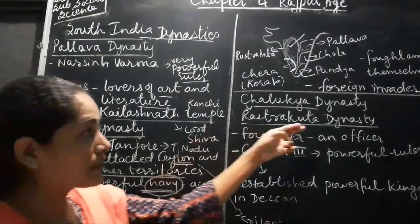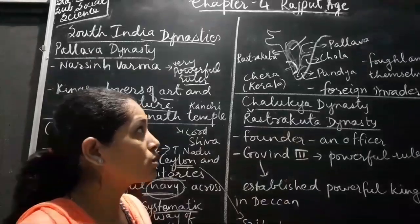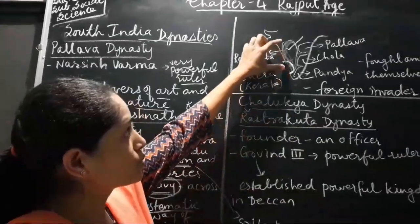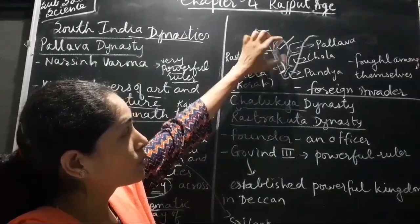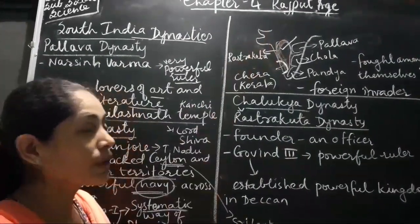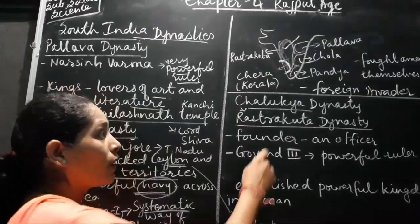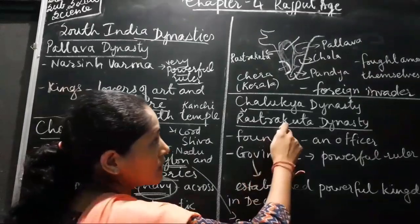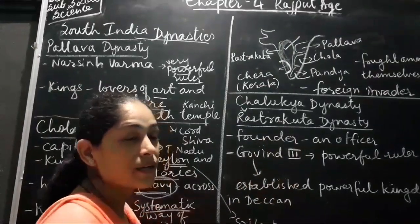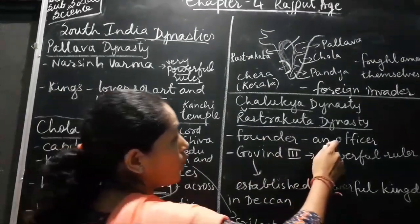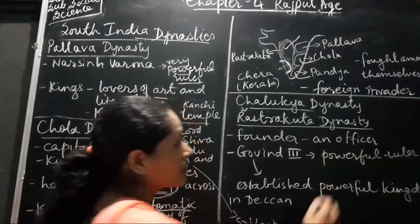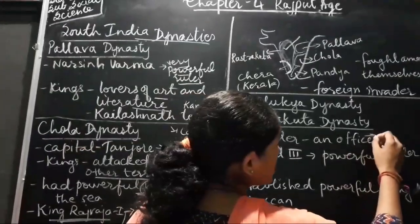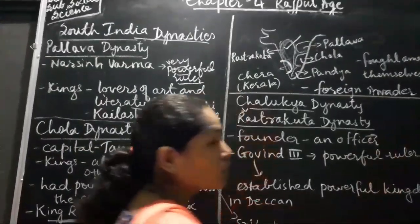After that we had Rastrakuta also. Rastrakuta was conquering over this region. Now, the founder of this Rastrakuta dynasty was an officer of that community and his name was Dantidurga.